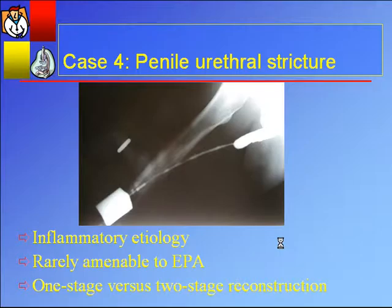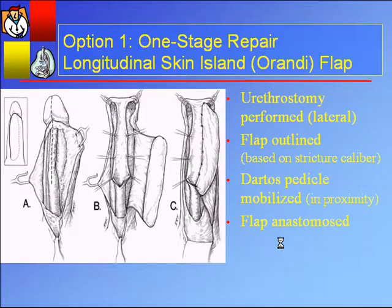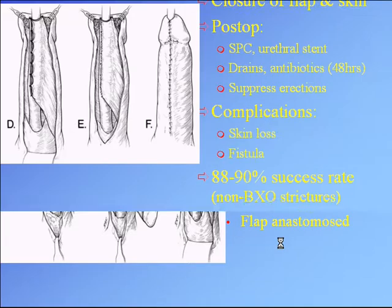Here's the urethrogram: this is someone with no previous instrumentation but an exceptionally long-segment urethral stricture from the tip of the penis down to about the mid-bulbous urethra — inflammatory, BXO. Obviously not amenable to urethrotomy or excision and primary anastomosis — the patient requires reconstruction. The argument is whether that's done in one stage versus two. A one-stage, often described by Orandi and his flap: incise the entire stricture after degloving the penis, spatulate it dorsally into healthy tissue, and onlay a local penile island flap. It gives a nice postoperative result. Post-operatively: urethral stent, suprapubic catheter, small suction drain, antibiotics for 48 hours, and erection suppression — usually valium at bedtime — about 88 to 90% success rate relatively short-term.